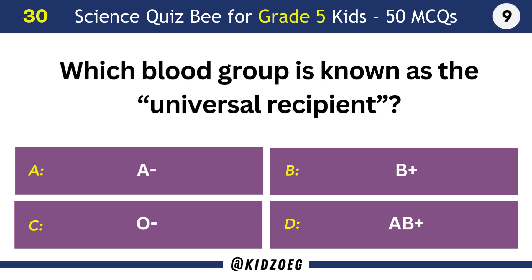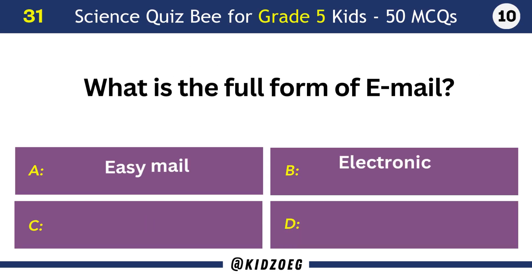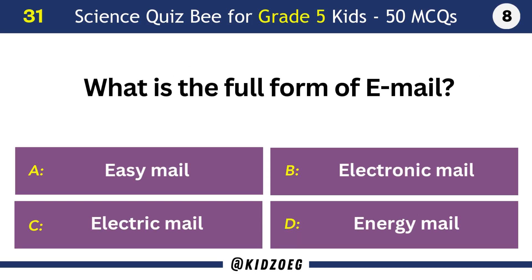Which blood group is known as the universal recipient? AB positive. What is the full form of email? Electronic mail.